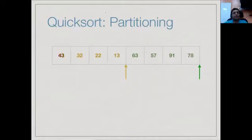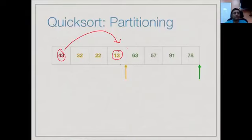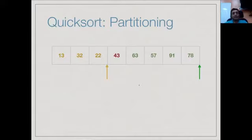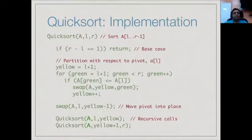Finally, we still have the pivot element at the start, not yet between the two partitions. The yellow pointer's left neighbor is the last lower element, and to its right is the first upper element. So we exchange the pivot (43) with the element at yellow minus 1 (13), placing the pivot in its correct center position. We then get the final partitioned array with the pivot in the middle, the lower part on the left, and the upper part on the right.